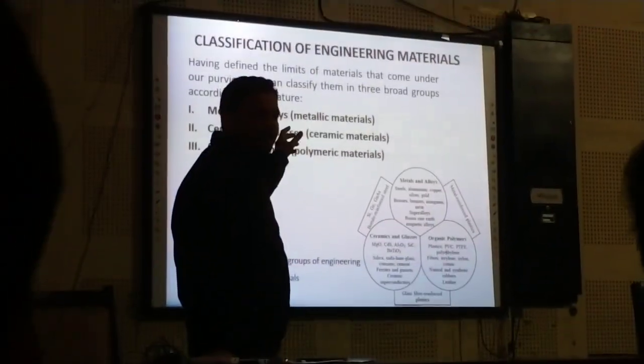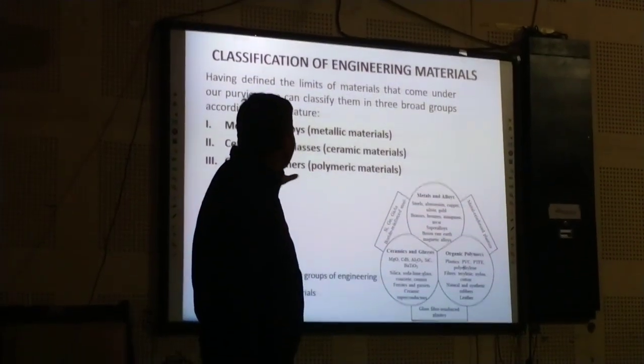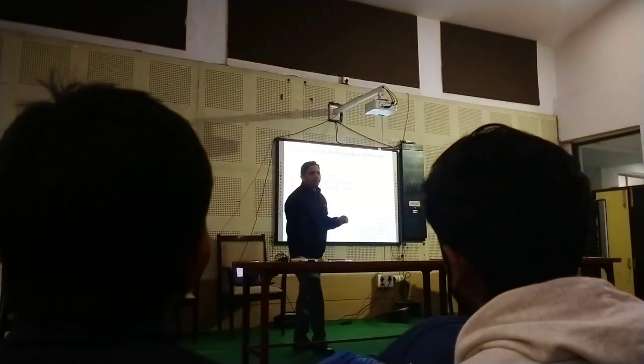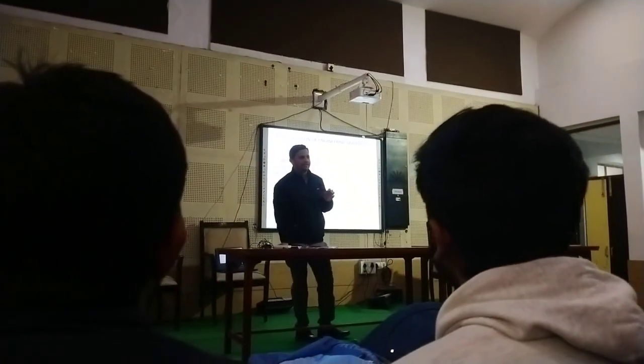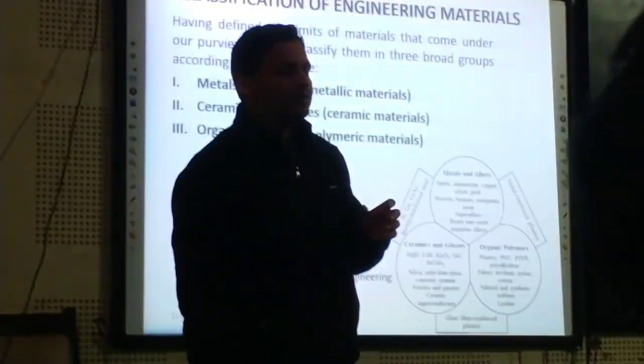Metals and alloys of metals. Ceramics, glass, and organic polymers — these are non-metals. Ceramics is a very good insulator.